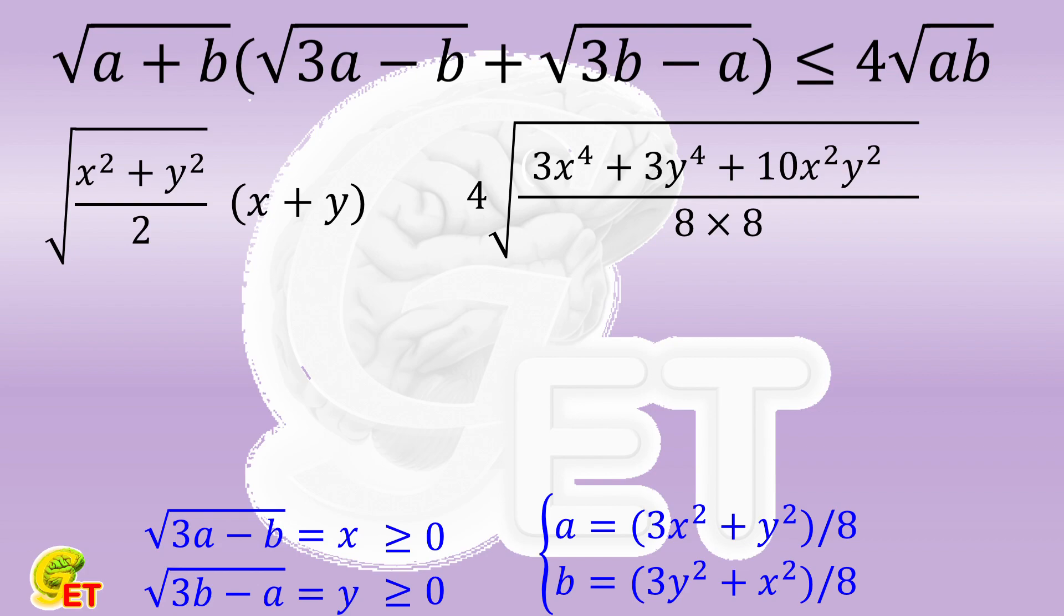We can take 6X squared Y squared together with 3X to the 4th power plus 3Y to the 4th power to make a perfect square, leaving 4X squared Y squared.